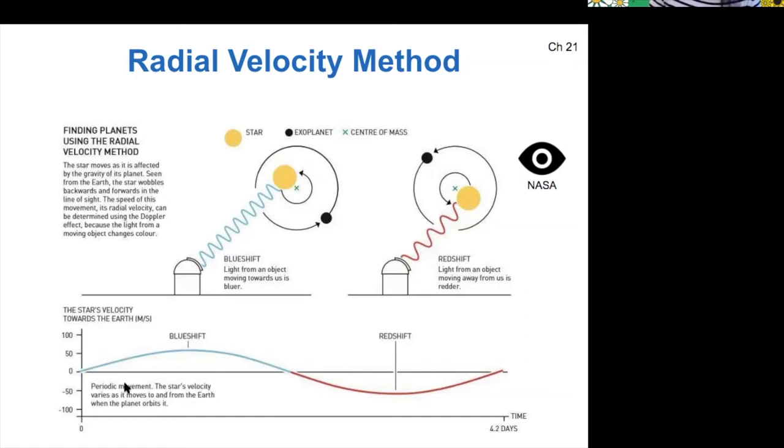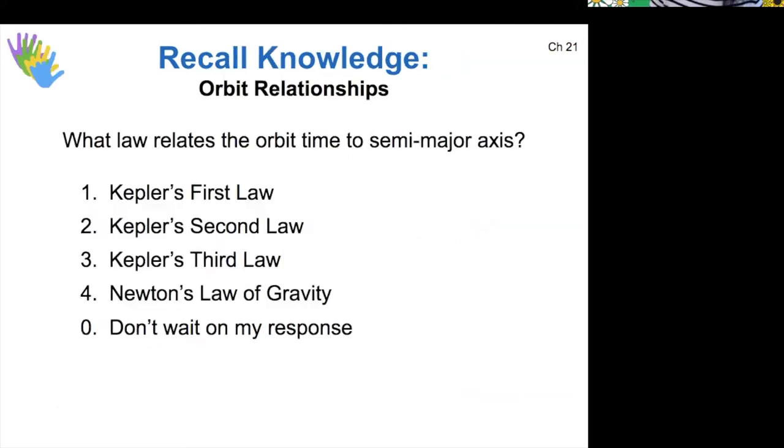Okay, so we're measuring over time. And just to tie into what we already know, which is the law that relates the orbital time of an object to its semi major axis. So remember Kepler's third law just says that orbits are ellipses. Kepler's second law is the equal areas and equal times. And then Kepler's third law is the one that relates orbital time to semi major axis.